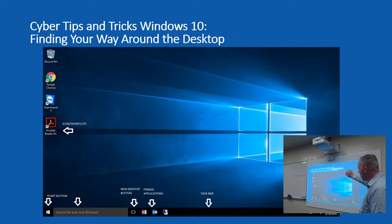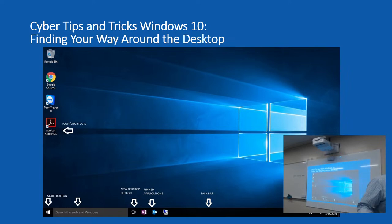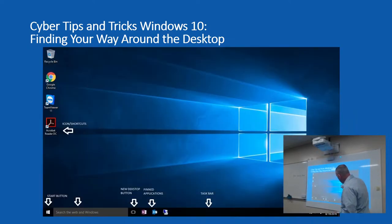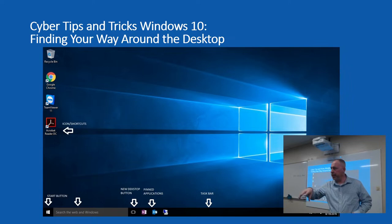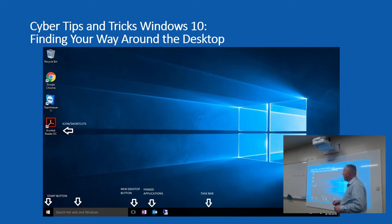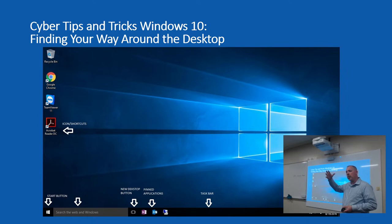On the desktop you have icons and a taskbar, and we're going to talk about what these different things mean. When working with your mouse, there are two buttons — left and right. The left mouse button is for selection, clicking and dragging. The right mouse button is primarily for a contextual menu — when you right-click on something, it brings up a menu based on what you right-clicked on.